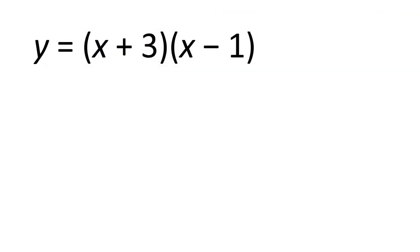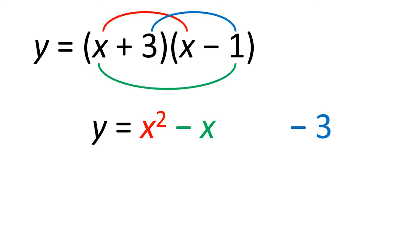If we were to expand out the brackets here, so if we multiply x by x and 3 times minus 1 we'll get minus 3. And then if we do x times minus 1, x times 3, simplify down, we're back to that quadratic equation. So it can be useful to put this in the factorised form or we might want it in the expanded form, depending on what we want to do with our quadratic equation.